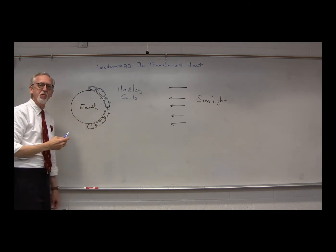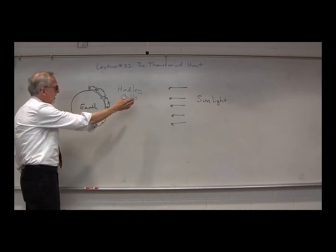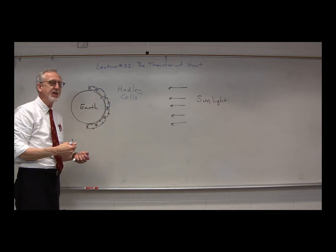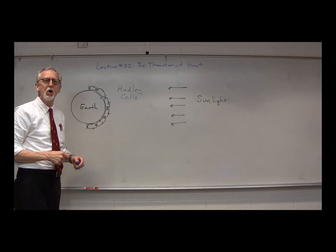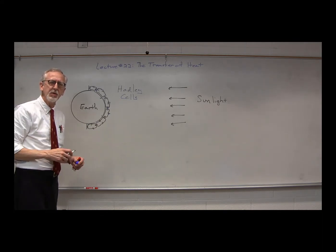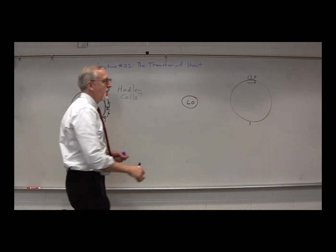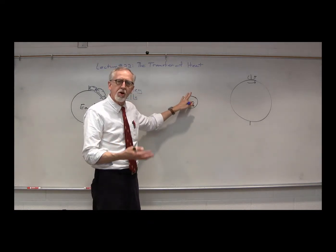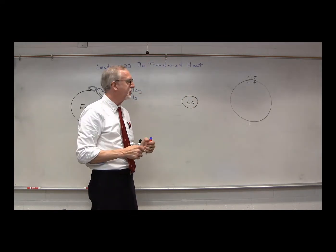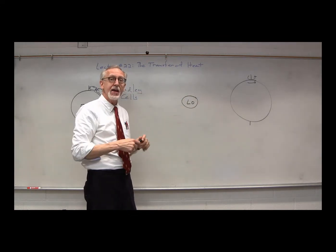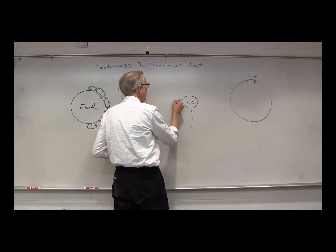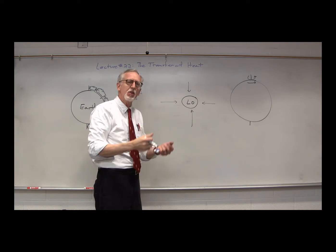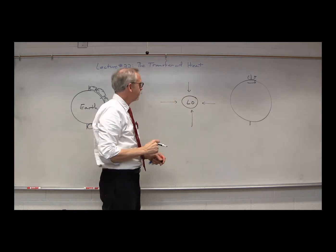Now let's think about an area over the ocean where sunlight warms the water, which then warms the air above it, causing that air to rise — creating a low-pressure zone. Air from around that region has to come in from the sides to fill in that low-pressure zone so it can rise.